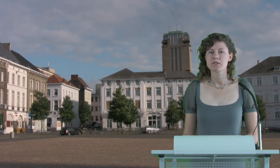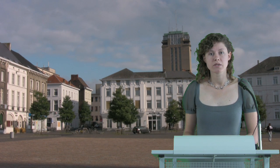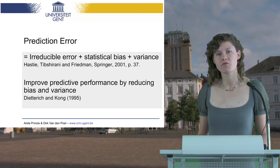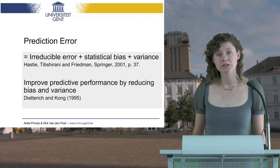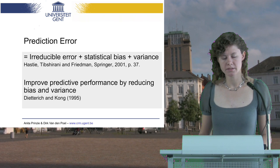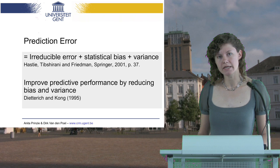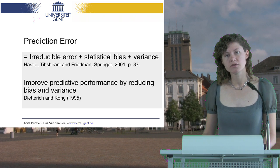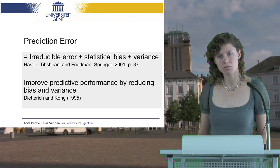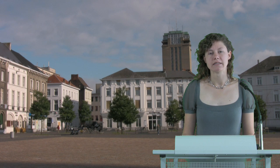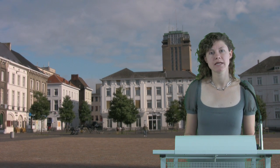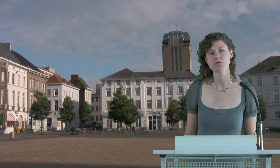The instability of the decision tree results in a high variance, which in turn results in a higher prediction error. Please recall the definition of prediction error. Prediction error is constituted out of three components: the irreducible bias, the statistical bias, and the variance. In order to reduce the error of any methodology, we need to reduce the statistical bias and the variance. Given this definition, it's clear that if we want to reduce the prediction error of decision trees, we must find a way to reduce its variance.